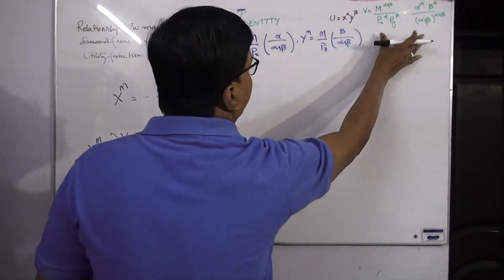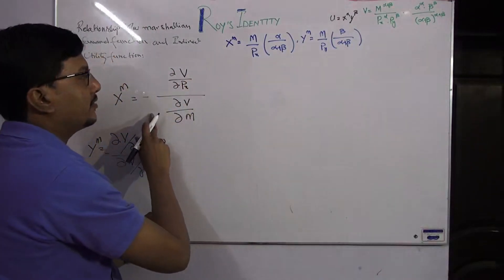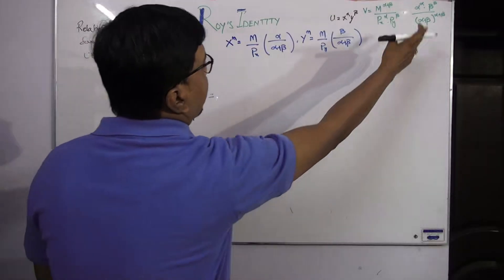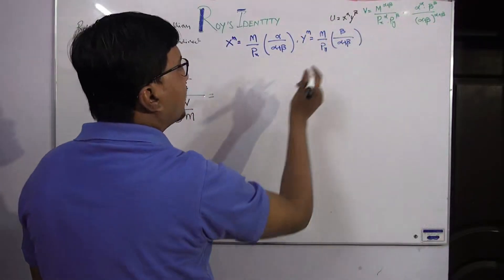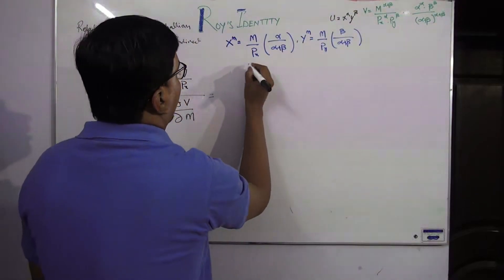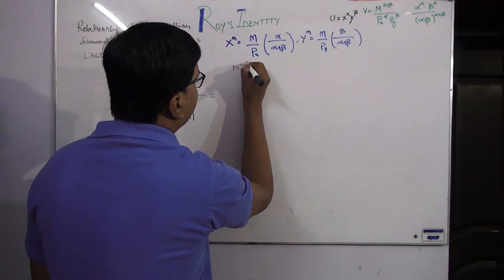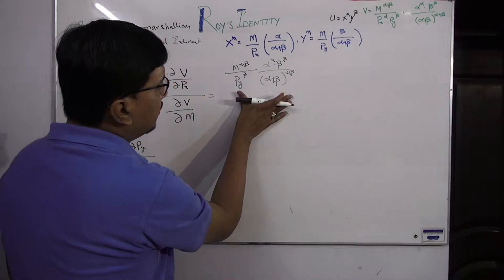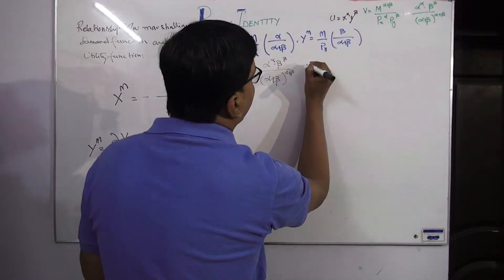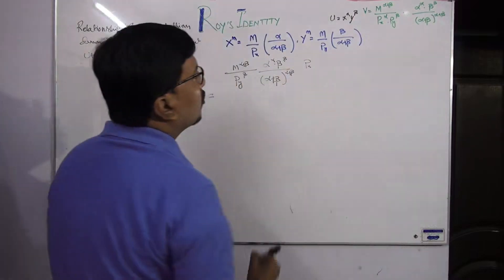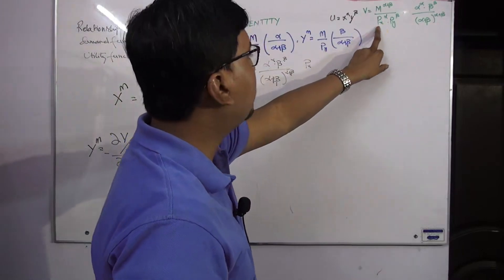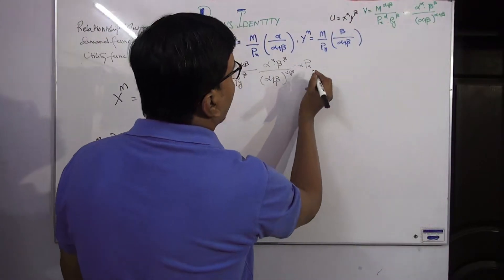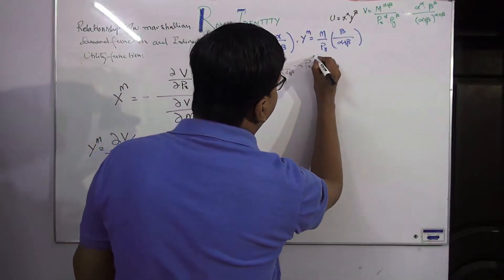Now we prove this. We have the indirect utility function and we apply Roy's Identity. First, we take the partial derivative of the indirect utility function with respect to px. The constant term M^(α+β) goes outside, and since px comes to the numerator, the power of px will be negative alpha, giving an exponent of (−α − 1).